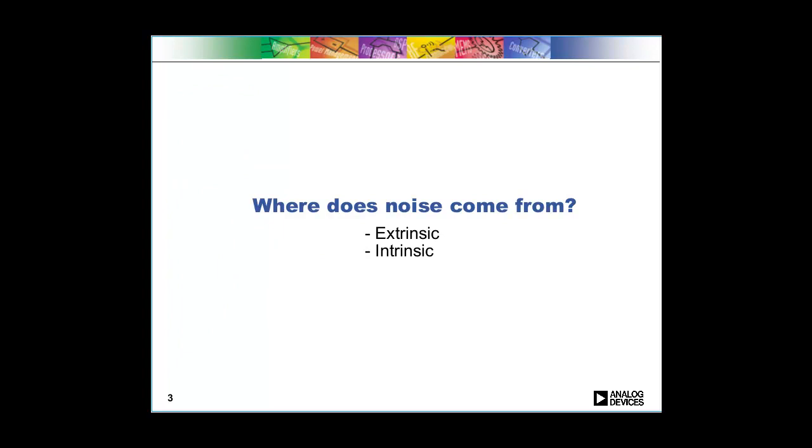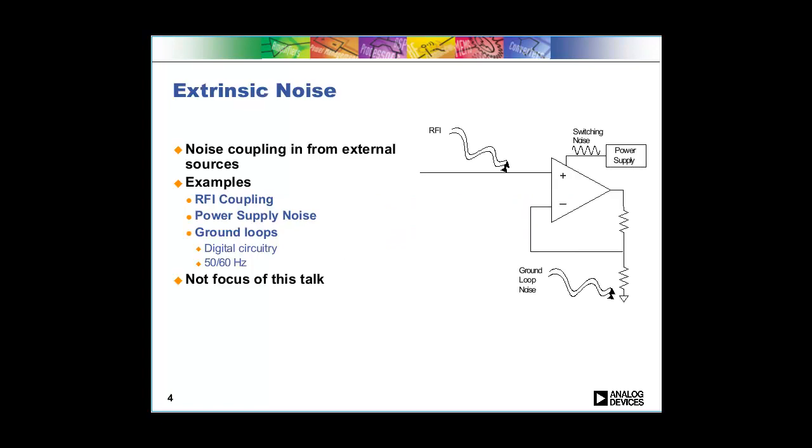Okay, so the first thing we want to talk about is the difference between intrinsic and extrinsic noise. Extrinsic noise is noise that comes in from other signal sources. Some folks might even say that to call this noise is not really correct because it's not really random. You might call it interference or hum or electromagnetic waves that are coming in. But at the end of the day, there are signals coming into your circuit that you don't want and that are obscuring the measurement that you actually do want.